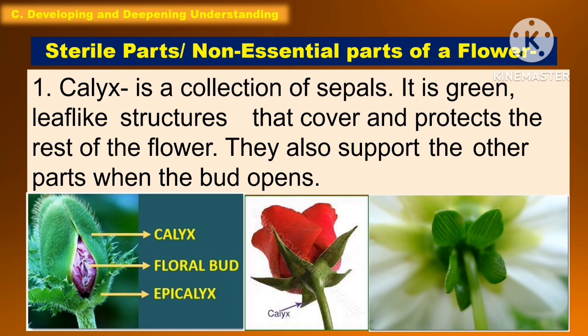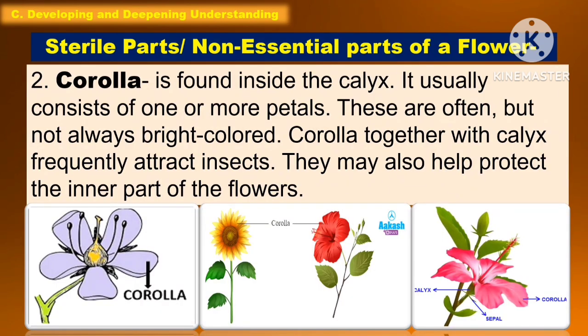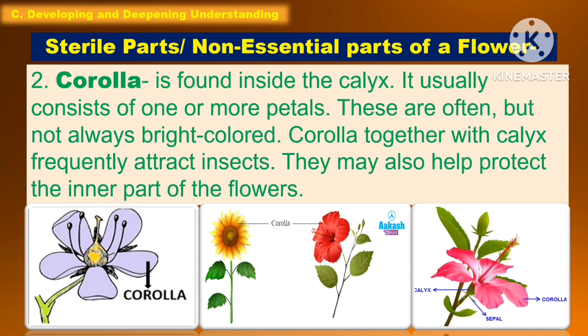The following are the sterile parts or non-essential parts of the flower. The first is the calyx, which is a collection of sepals. It is a green, leaf-like structure that covers and protects the rest of the flower, and supports the other parts when the bud opens. The next is the corolla, found inside the calyx, which usually consists of one or more petals. These are often brightly colored, and together with the calyx, frequently attract insects and help protect the inner parts of the flower.